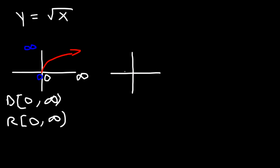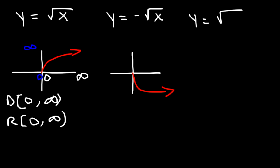What's the general shape for negative square root of x? If you put a negative sign in front of the radical, it's going to reflect over the x-axis. And if you put a negative sign inside the radical in front of x, then it's going to reflect over the y-axis.